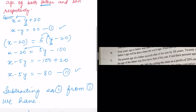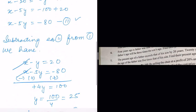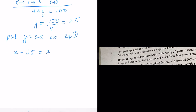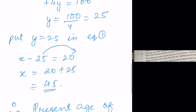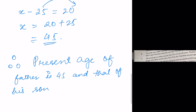Substituting y equals 25 into equation number one: x minus 25 equals 20, so x equals 20 plus 25 which equals 45. Therefore the present age of the father is 45 and the present age of his son is 25. Thank you so much, we will meet in the next video.